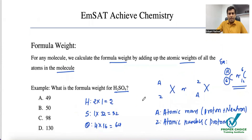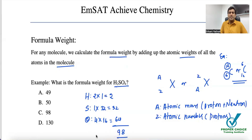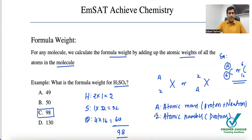Adding them all together: 2 + 32 + 64 = 98. So the formula weight of sulfuric acid is 98, which corresponds to option C. This is the way of calculating formula weight — whichever element they give, identify how many atoms of that element there are, multiply by their atomic weight, and add them all up.